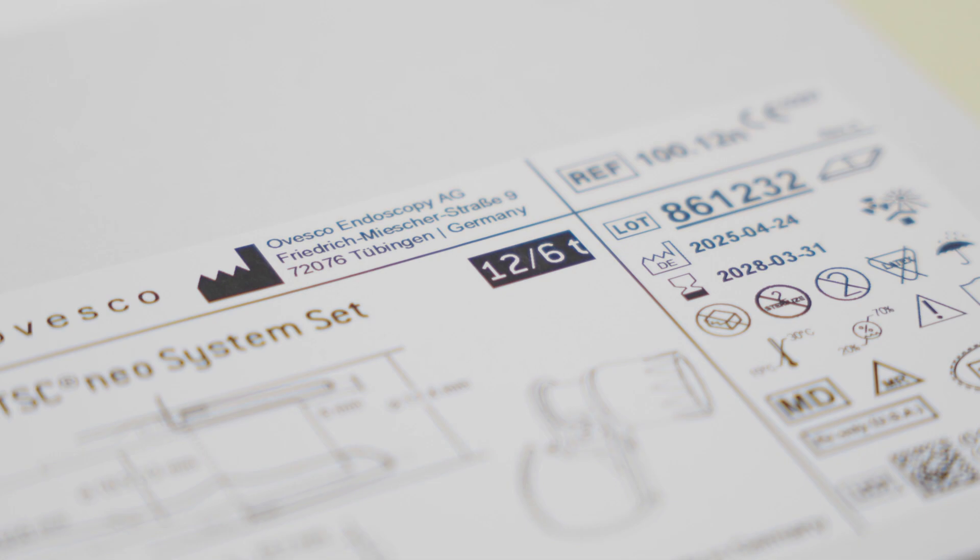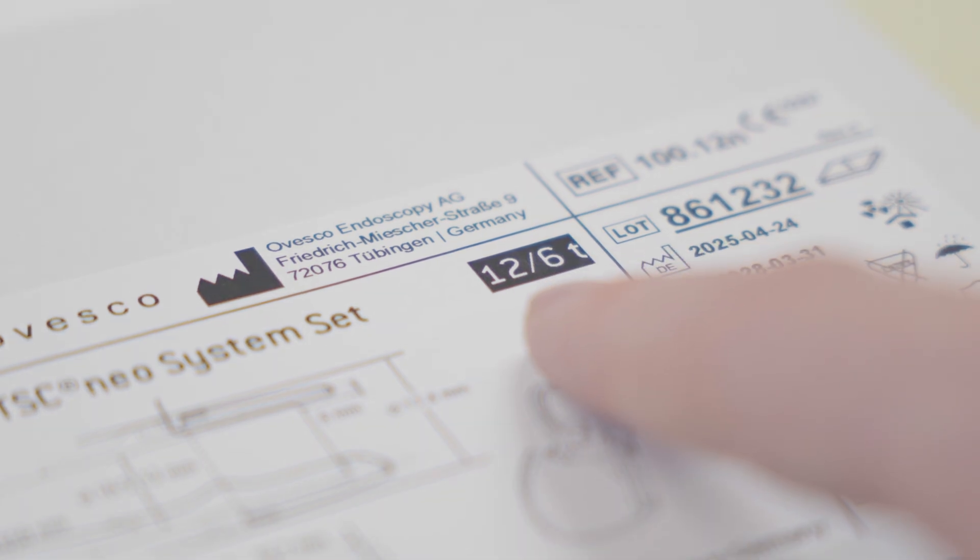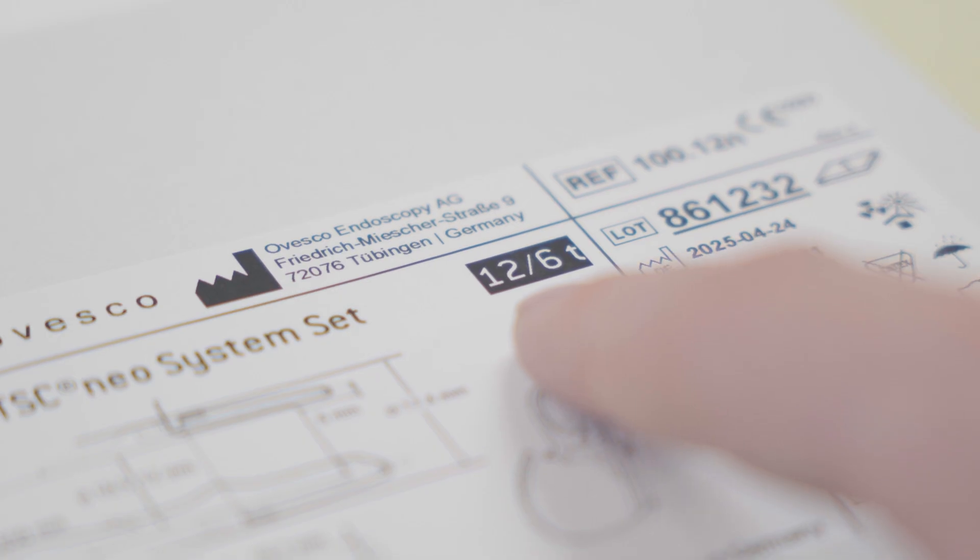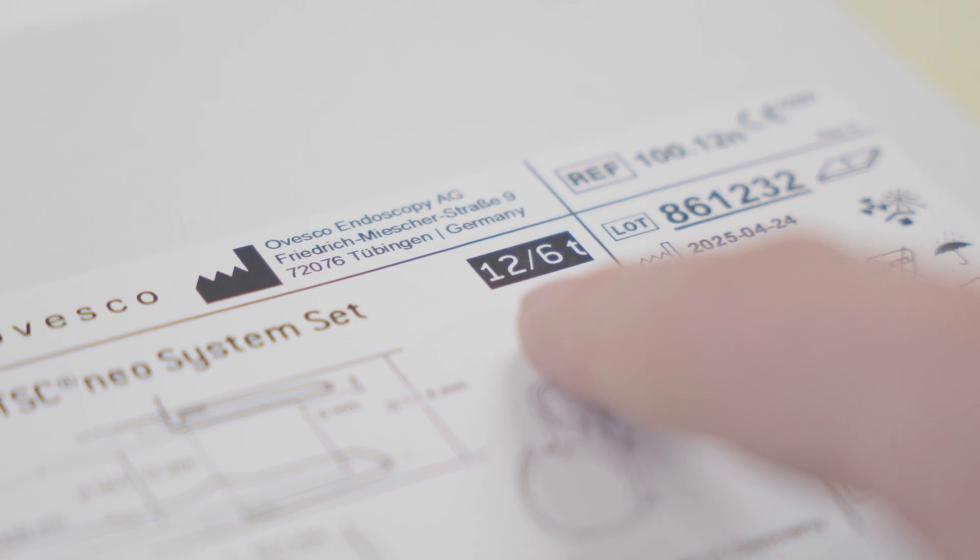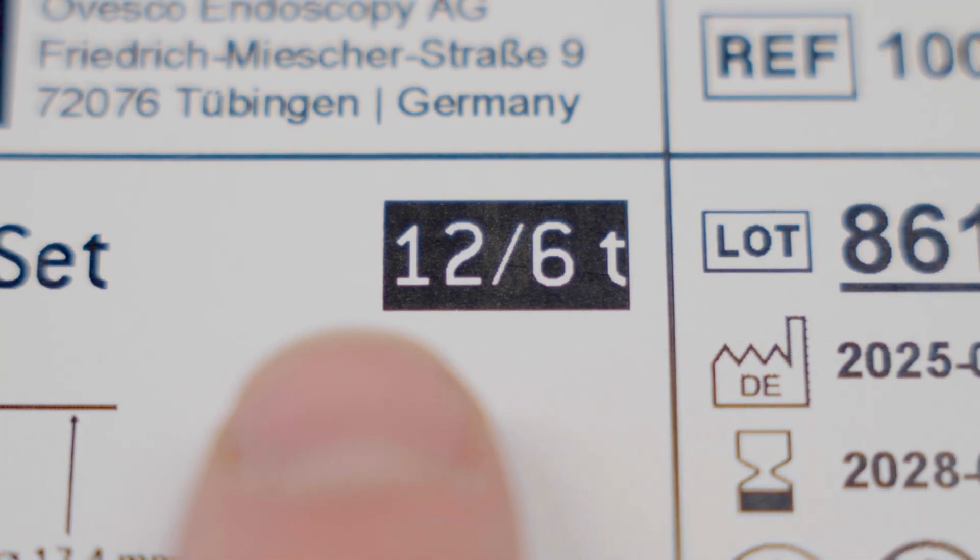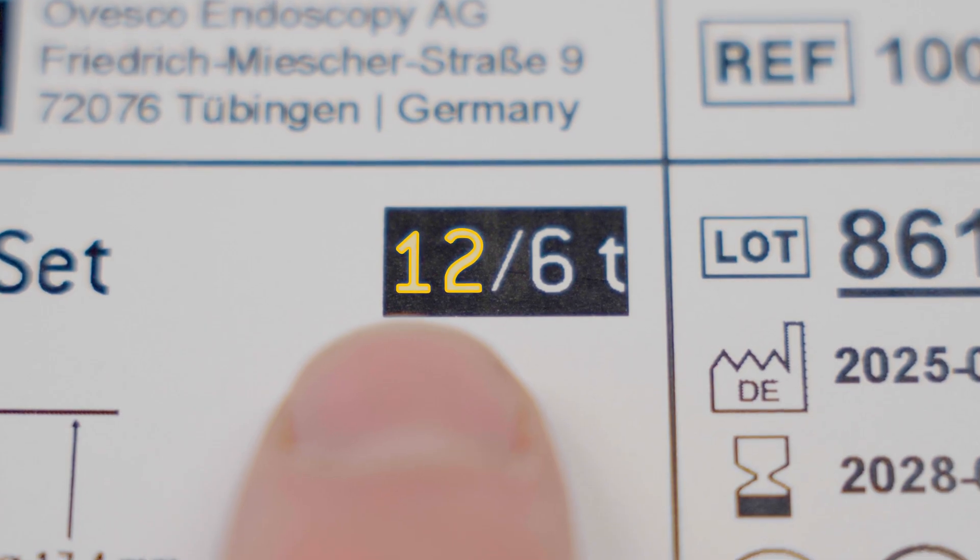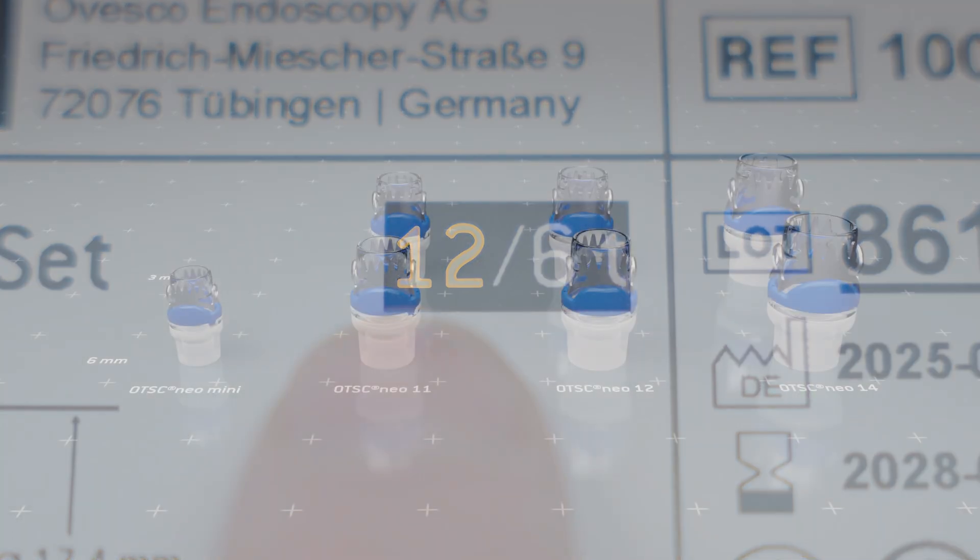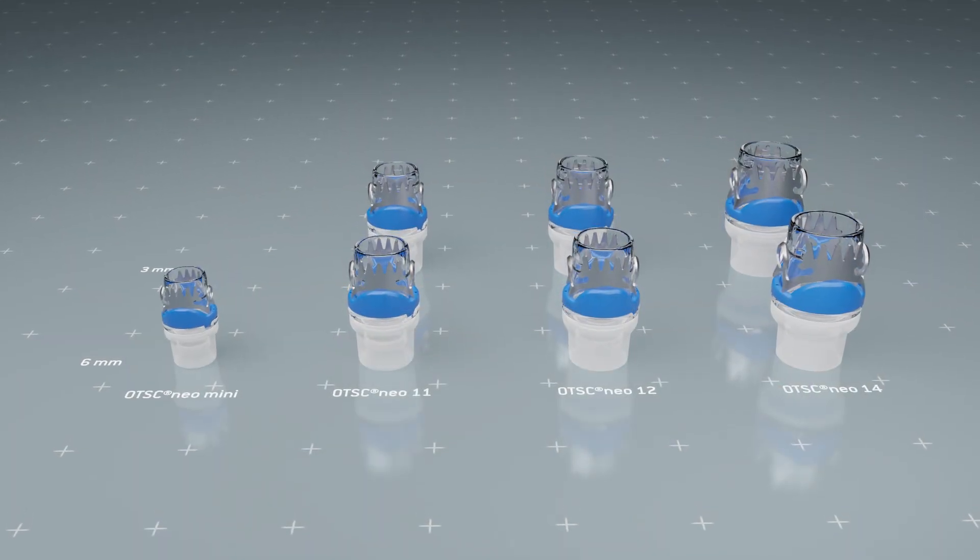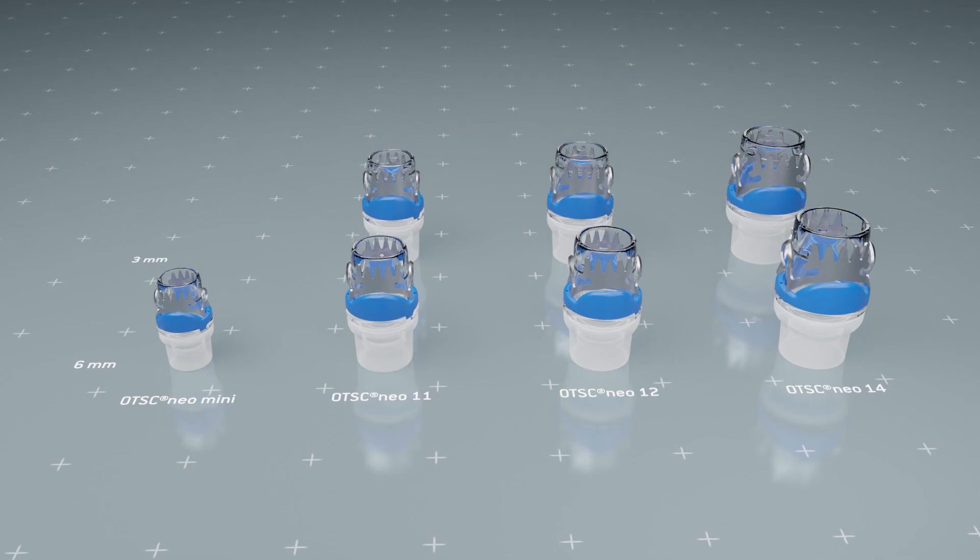The identification codes on the packaging of the OTSC NEO system provide information on compatibility, cap depth and clip-tooth geometry. The first number refers to the maximum compatible outer diameter of the endoscope. The system is available in sizes 11, 12 and 14, as well as in a mini version.